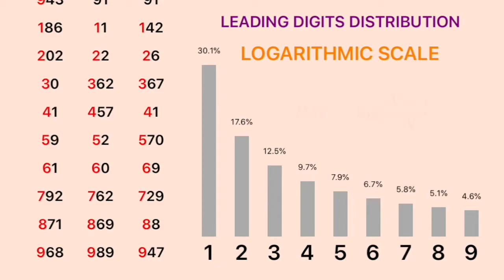More precisely, the probability of a number with n as its leading digit, where n is between one and nine, is: log of (n plus one) divided by n.